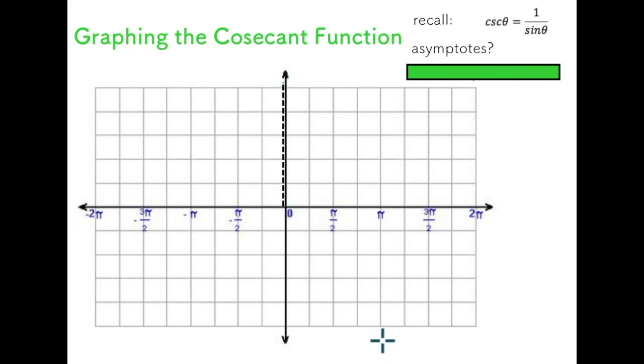I'll start at 0, go to pi, 2 pi, and so on, and I can continue that in the negative direction also, negative pi and negative 2 pi. So that's the idea there. You can start by looking at the vertical asymptotes.